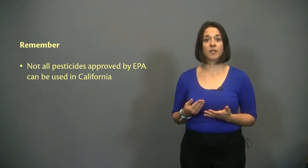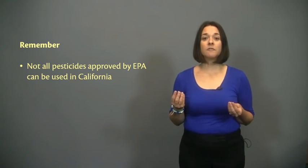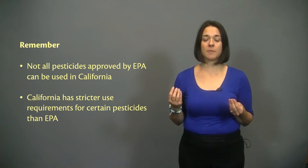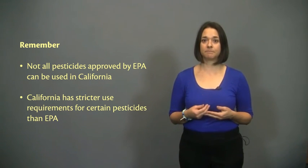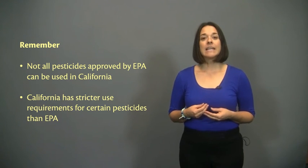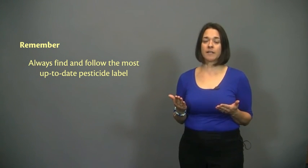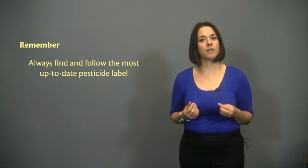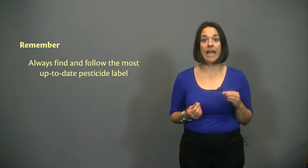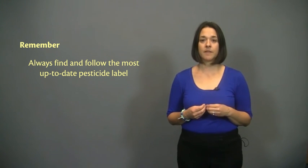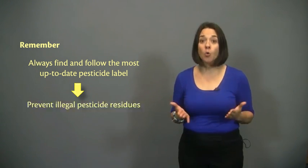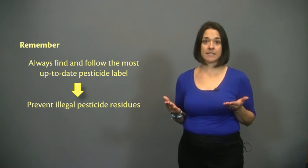Remember, not all pesticides approved by EPA can be used in California, and California has more strict use requirements for certain pesticides than EPA. It is essential to always find and follow the most up-to-date pesticide label so you can be sure you are using the product as it was intended and in accordance with the most recent scientific findings and regulations. Following the pesticide label is the only way to prevent illegal pesticide residues.